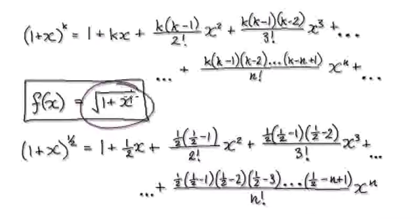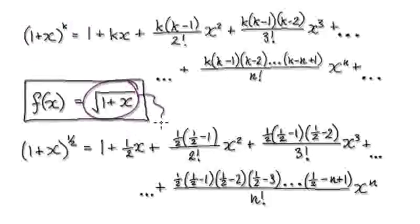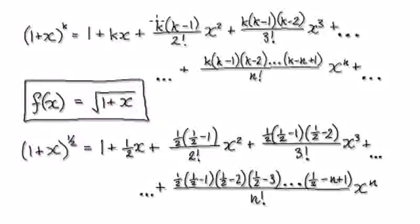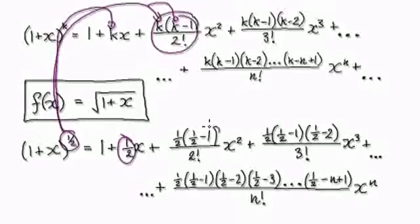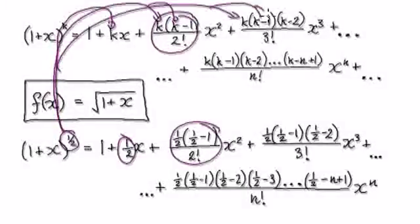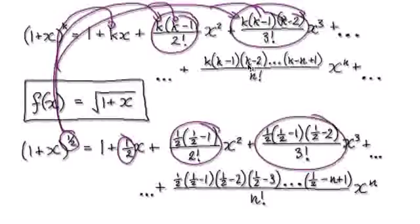Let's say you've got this function. Rewrite this function in the binomial form. So blindly use this formula — put k into here. That will then give you this. Put k into here, into here, and this whole thing will then become this. Then put k into here, into here, into here, and this whole thing will then become this.